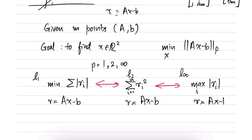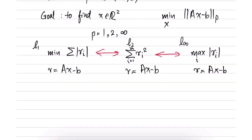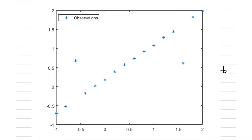Let us take a numerical example to demonstrate this better. Here is an example with a few observations. Note that there are two points which are off the line — these are two observations with large error, also called outliers. Using the L2 norm penalizes the larger residuals by their square, while using the L1 norm penalizes all the residuals by their absolute value.